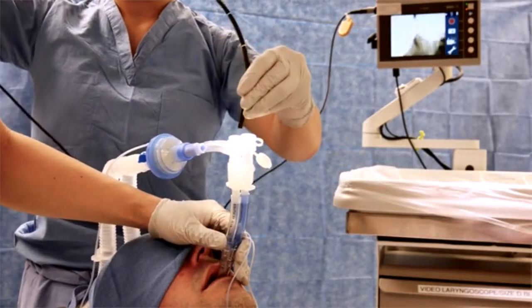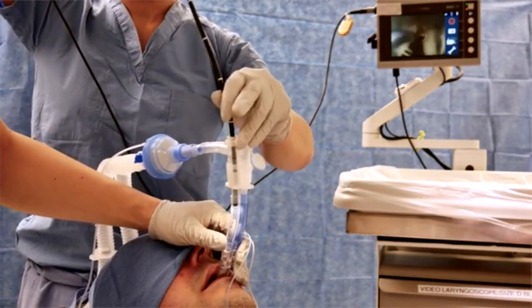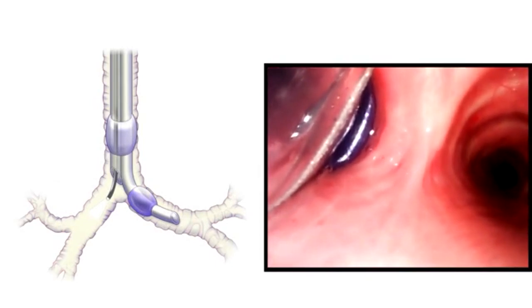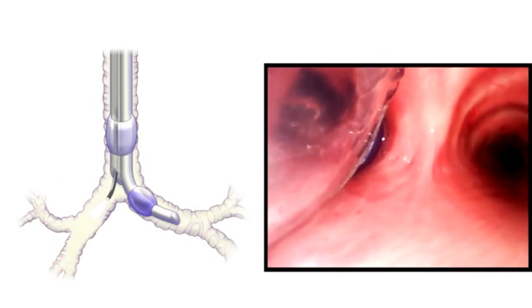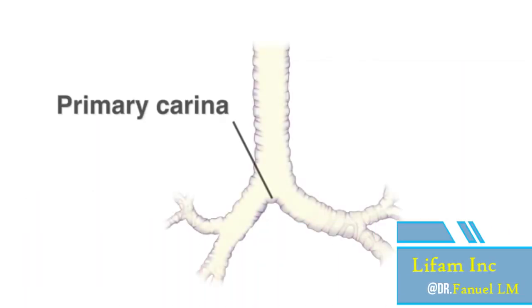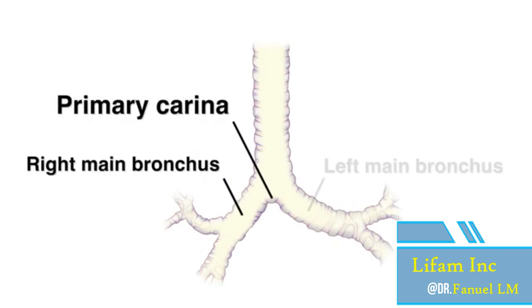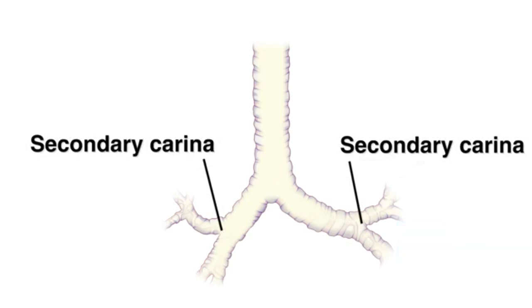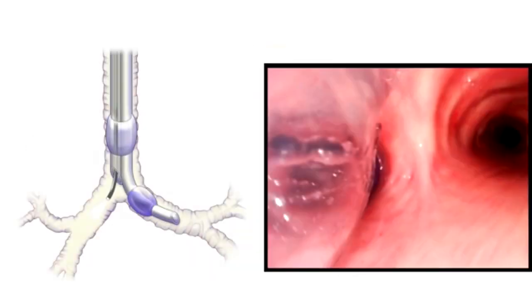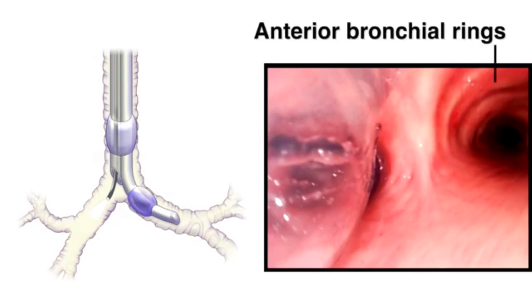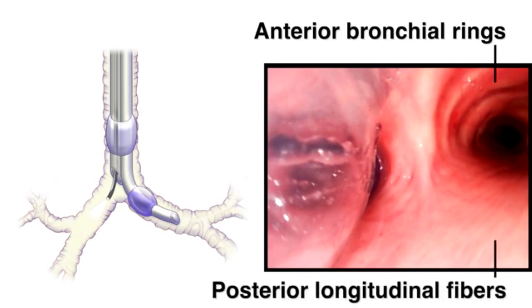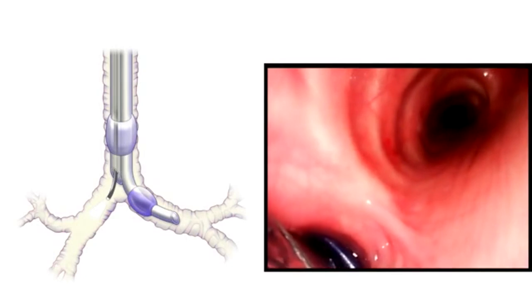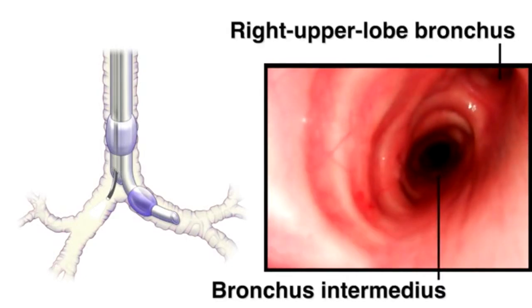Perform fiber-optic bronchoscopy to confirm that the double-lumen endotracheal tube is positioned correctly. First, insert the bronchoscope into the tracheal lumen. Regardless of whether the tube has been placed on the left or right side, an inflated bronchial cuff, which is often blue, should be visible in the ipsilateral main bronchus with minimal herniation of the cuff into the trachea. Make sure to differentiate the primary carina — associated with the takeoff of the right and left main bronchi — from a secondary carina, associated with the takeoff of either a right or left lobe. Various anatomical structures can be used as reference points; for example, visualization of the cathedral-shaped bronchial rings anteriorly and longitudinal fibers posteriorly can assist with left-right orientation. The right upper lobe bronchus and the bronchus intermedius, which divides into the right middle and right lower lobe bronchi, should also be visible and can help confirm orientation.